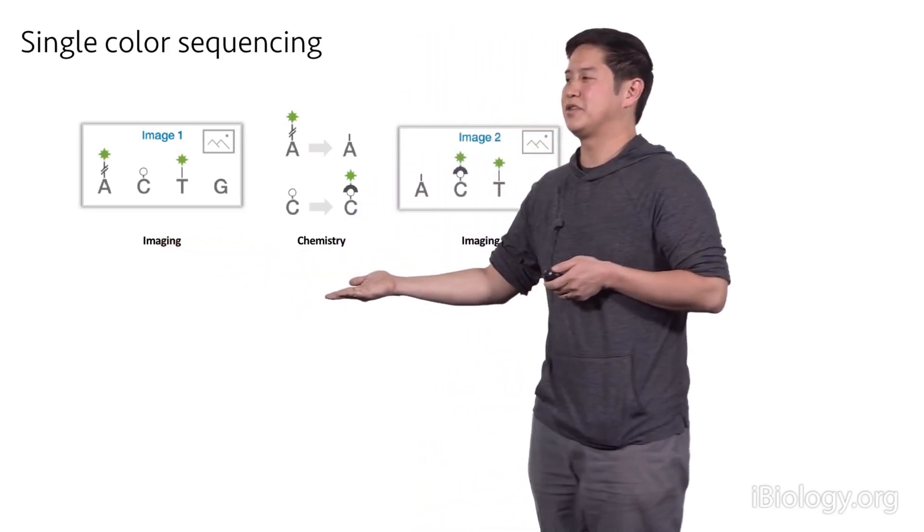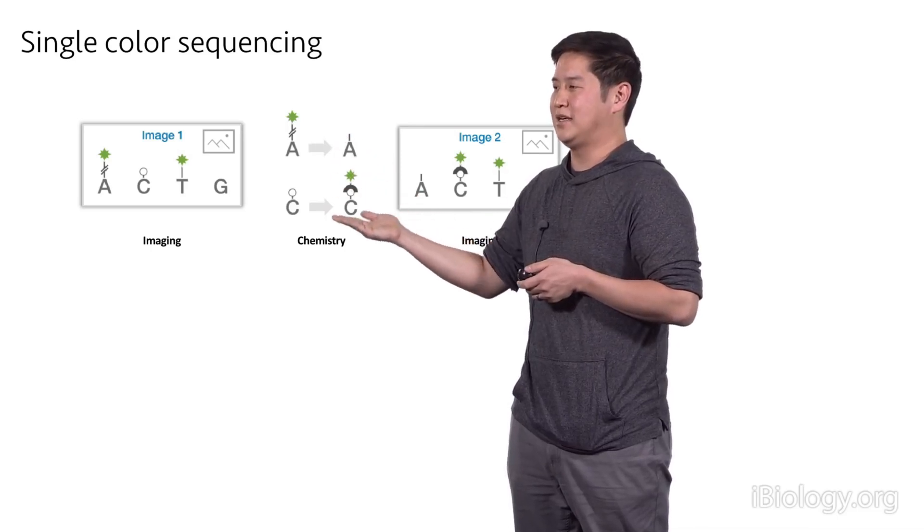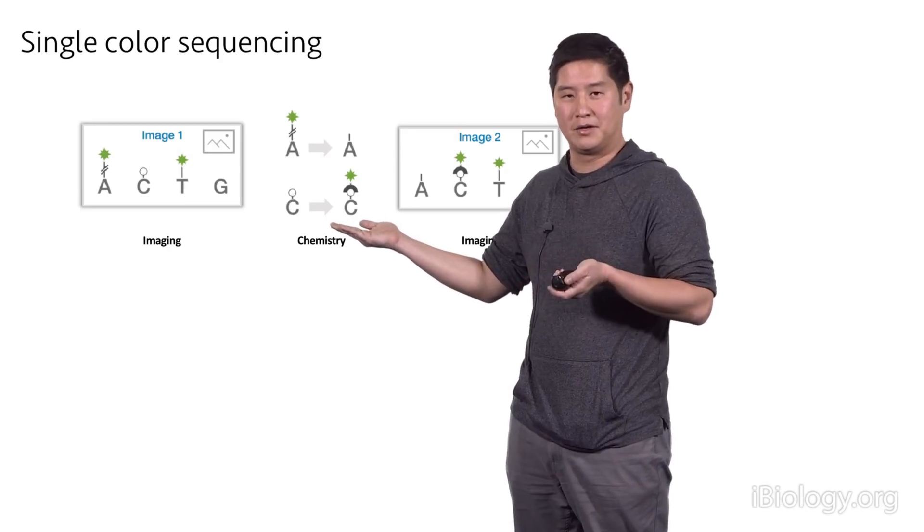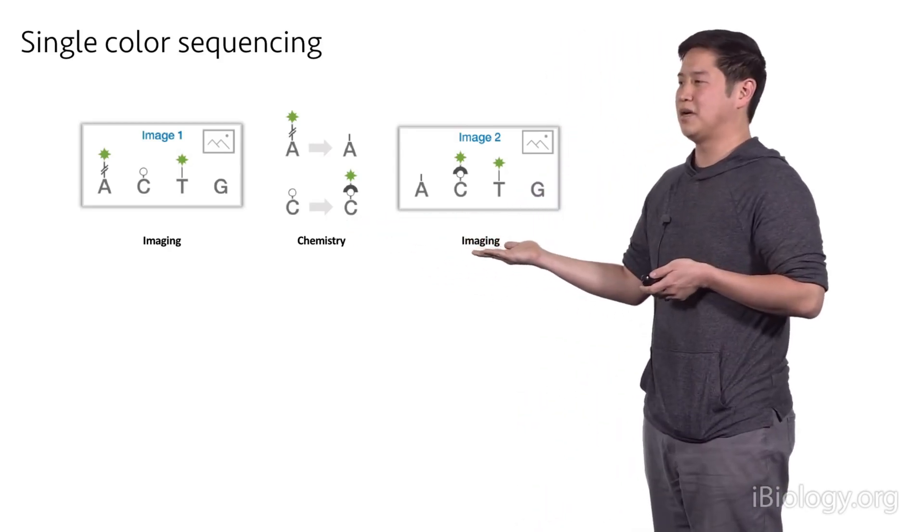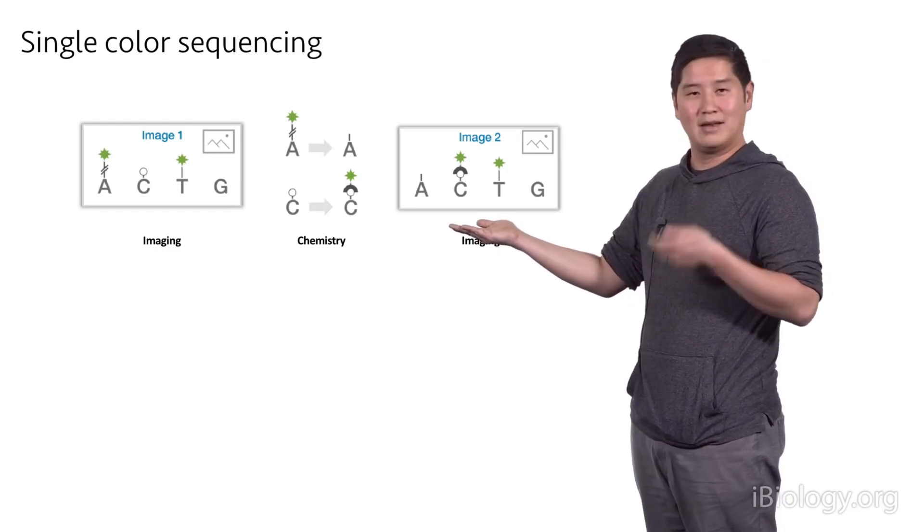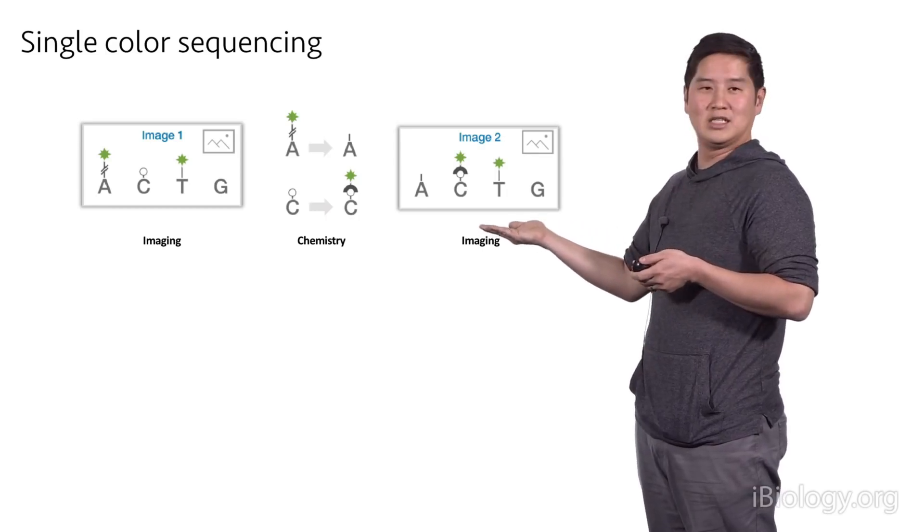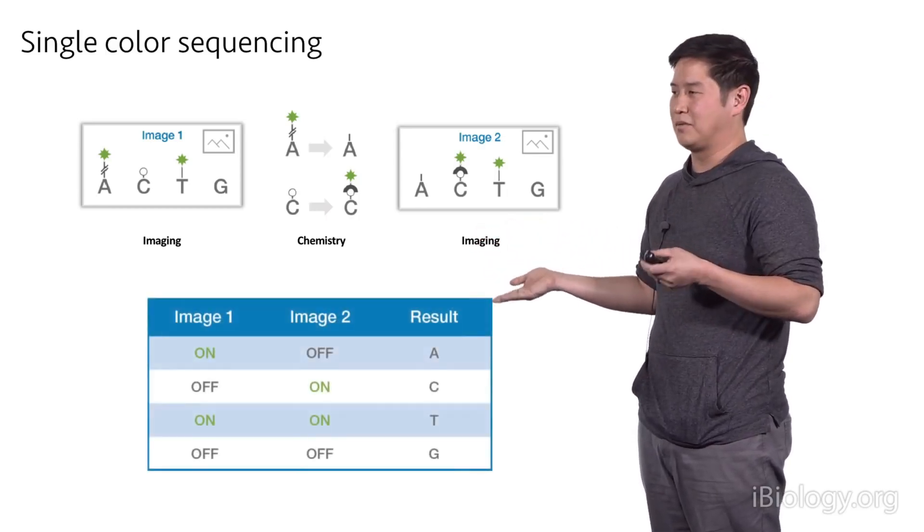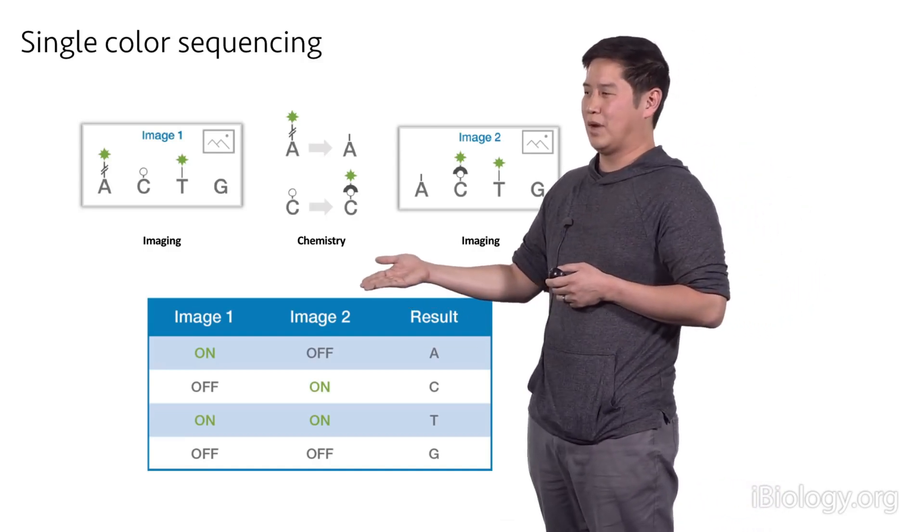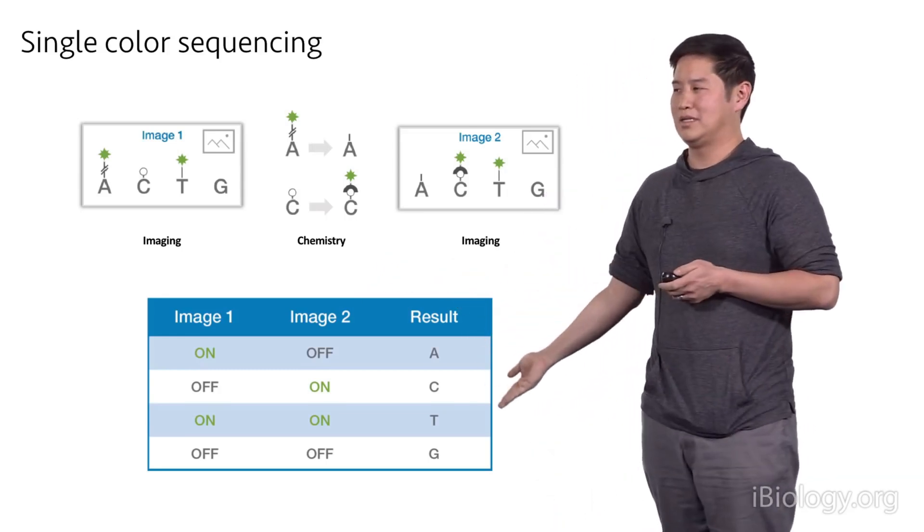Next, we go through a chemistry step that will cleave the green color from the A bases. And it'll add a molecule that will bind to the C bases and make them now colored. And so we take a second image. So in the second image, A's won't have any color because any that did had them cleaved off. The G's still won't have any color, but both the C's and T's will have color. And what this looks like if you break this down is if you compare a single cluster and look at its color, whether it's on or off between image one or two, you can get four different bases out.